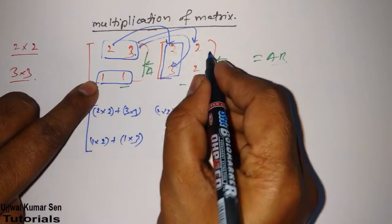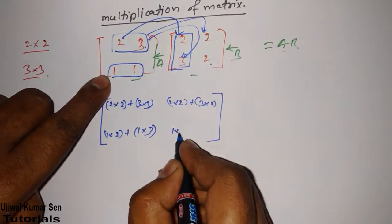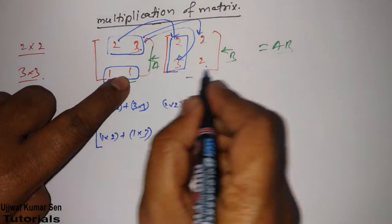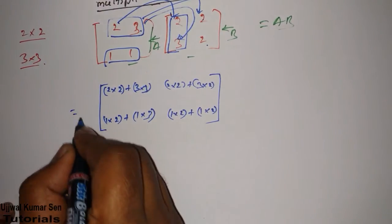Now, let's move to the next column. 1 multiple 2, 1 multiple 2. We will do calculation a little bit.